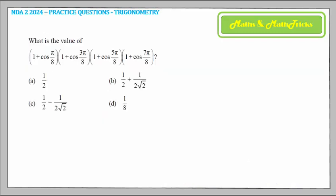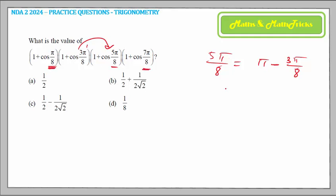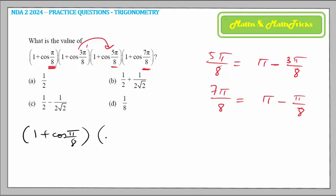The next question has a product of four brackets involving angles with π/8. We notice connections between the angles: 5π/8 = π - 3π/8, and 7π/8 = π - π/8. So the expression becomes (1 + cos(π/8)) × (1 + cos(3π/8)) × (1 + cos(5π/8)) × (1 + cos(7π/8)), where we keep cos(π/8) and cos(3π/8) as they are.